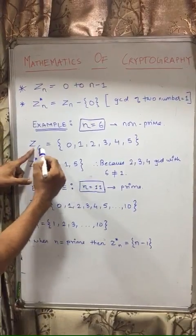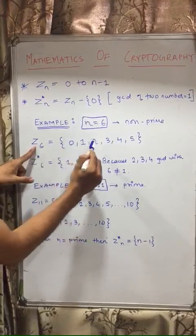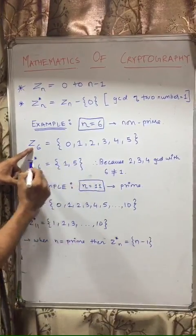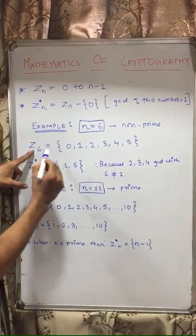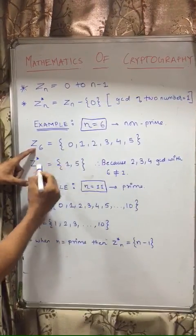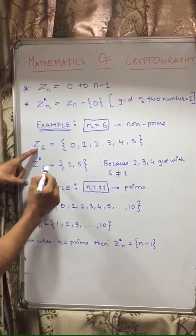Now we'll go to 6 and 2. The gcd is 2, so we'll not include in the Z star set. Now 6 and 3, the gcd is 3, so still we'll not include that in our Z star set.